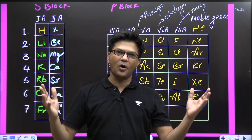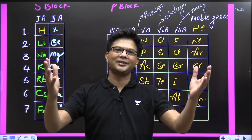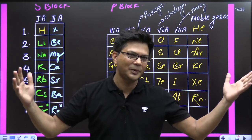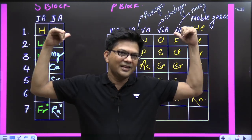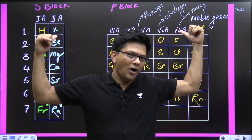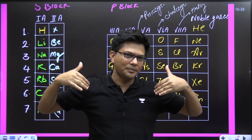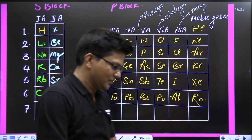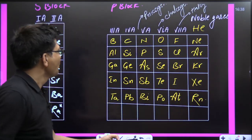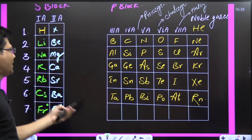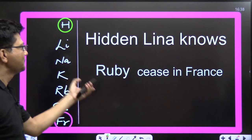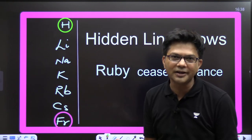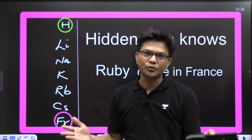S and P block with Baba HSP! So for the first group — alkali metals — here is the code. I'm going to sing the song for this.